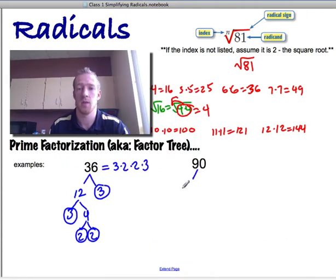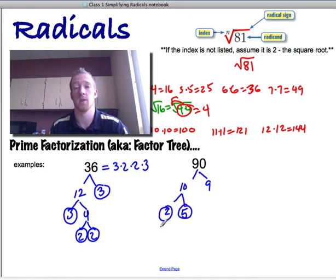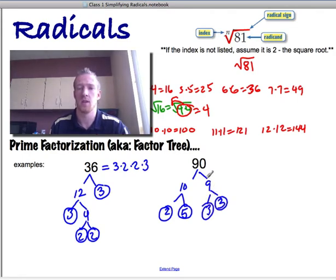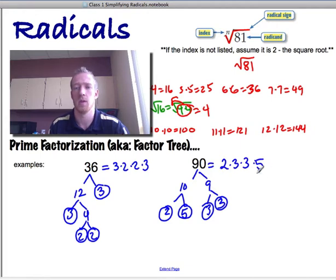So like 90 would be 10 and 9. It doesn't matter how you break it down, you just got to get to prime numbers. That's 2 and 5. This is a prime number. Prime number means it's only divisible by 1 and itself. This is 3 and 3. So 90 is the same as 2 times 3 times 3 times 5. I like to write them in order from smallest to biggest.